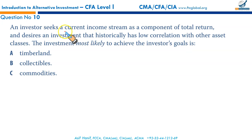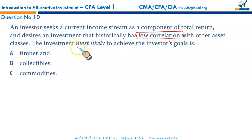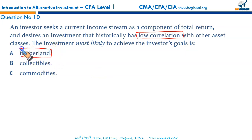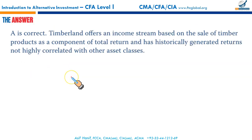An investor seeks a current income stream as a component of total return and desires an investment that historically has low correlation with other asset classes. The investment most likely to achieve the investor's goal is timberland. Timberland offers a stream of income based on the sale of timber products, and these returns are generally not highly correlated with the return of other assets, fulfilling the investor's objective. Not collectibles, not commodities — hence A is the correct option.